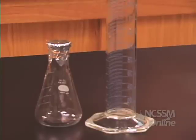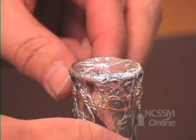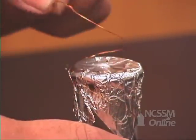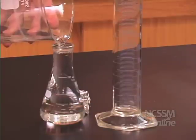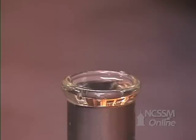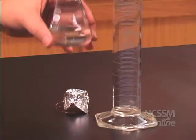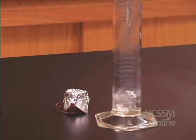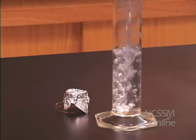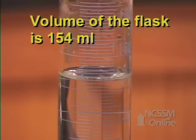We will determine the volume of the flask, which is also the volume which the vapor occupied at the temperature of the boiling water bath. We will remove the copper wire and the aluminum foil. We will fill the flask completely with water, and we will pour the water into a graduated cylinder. We will record the volume of the water.